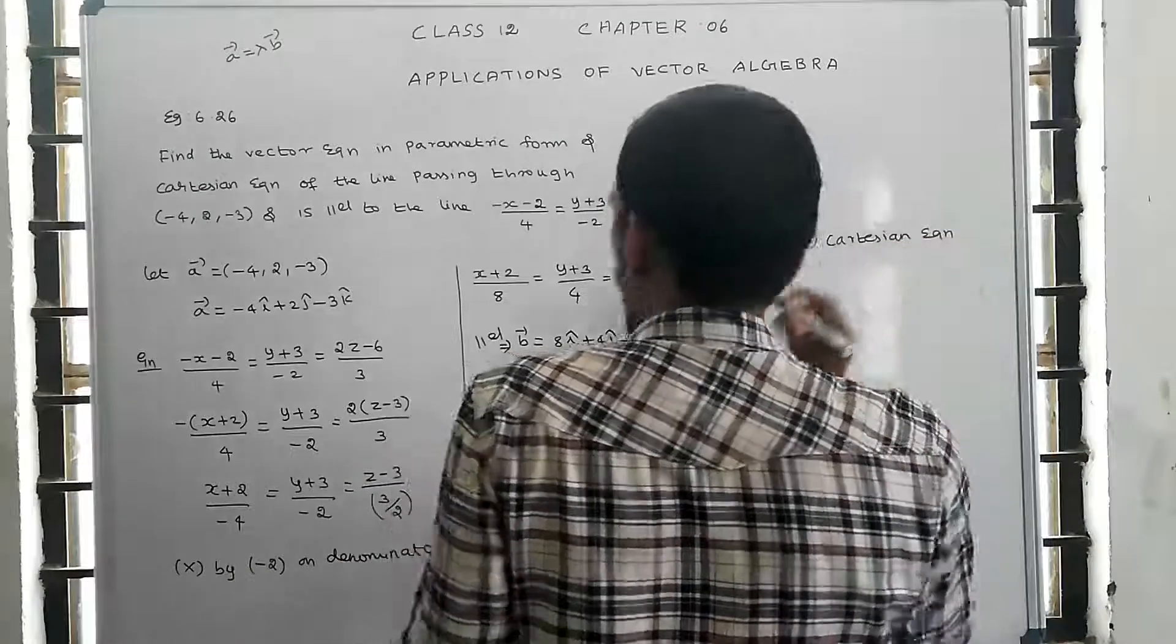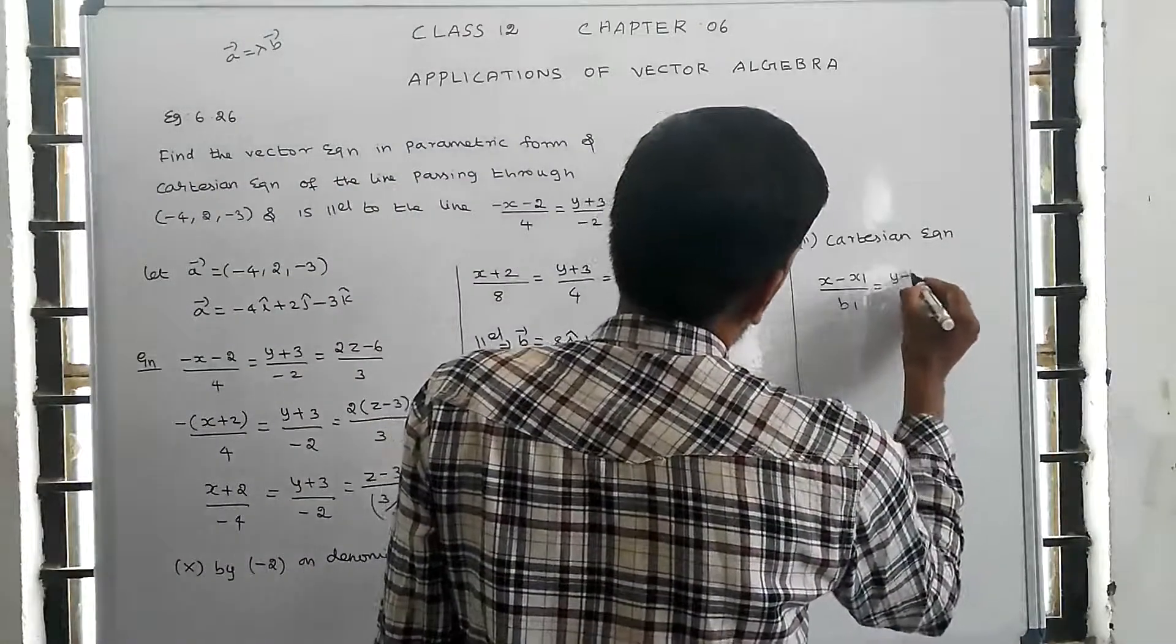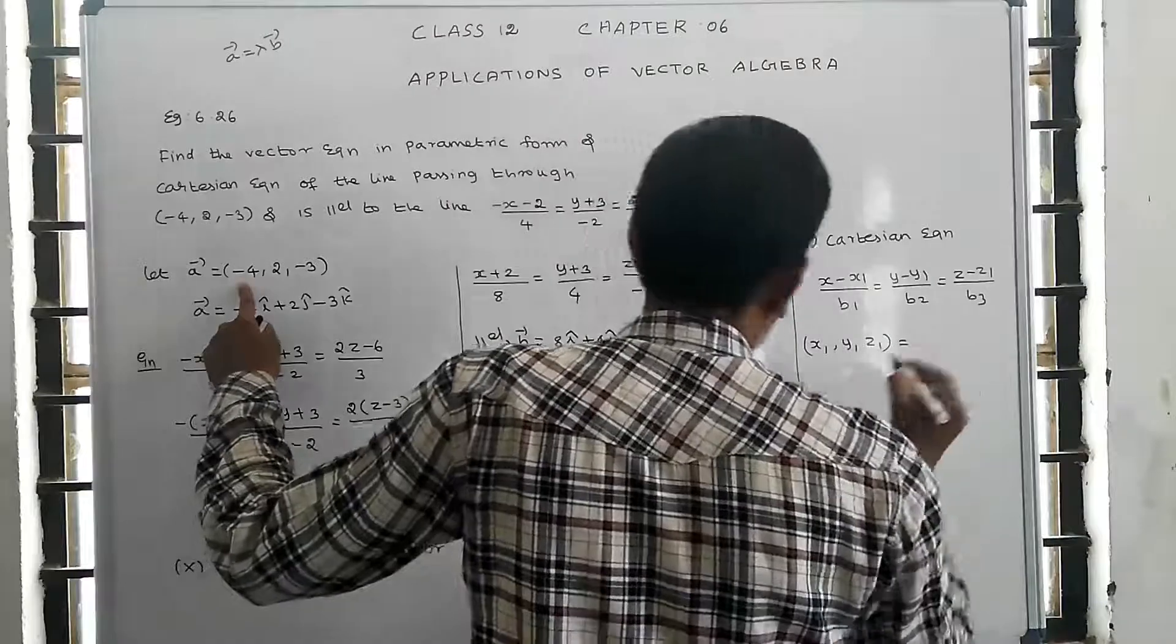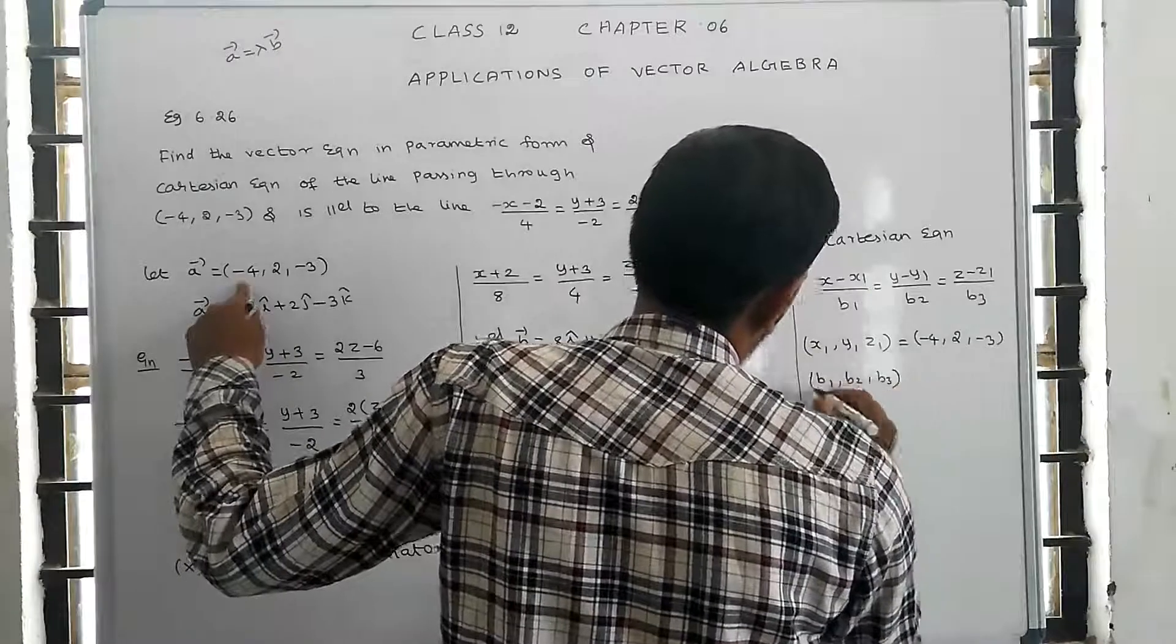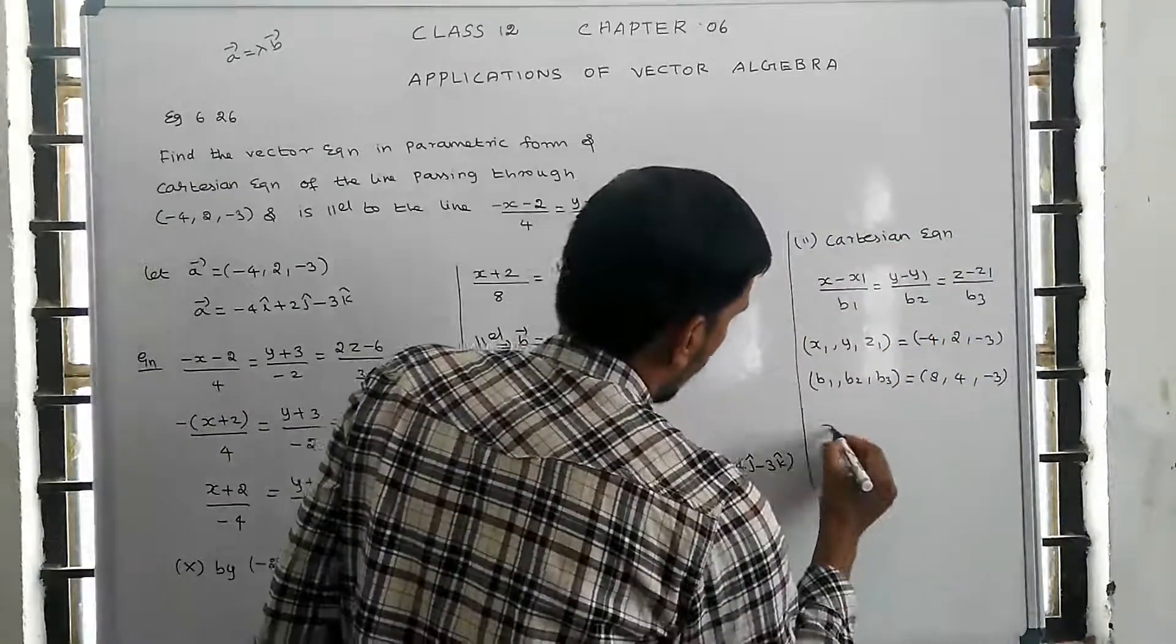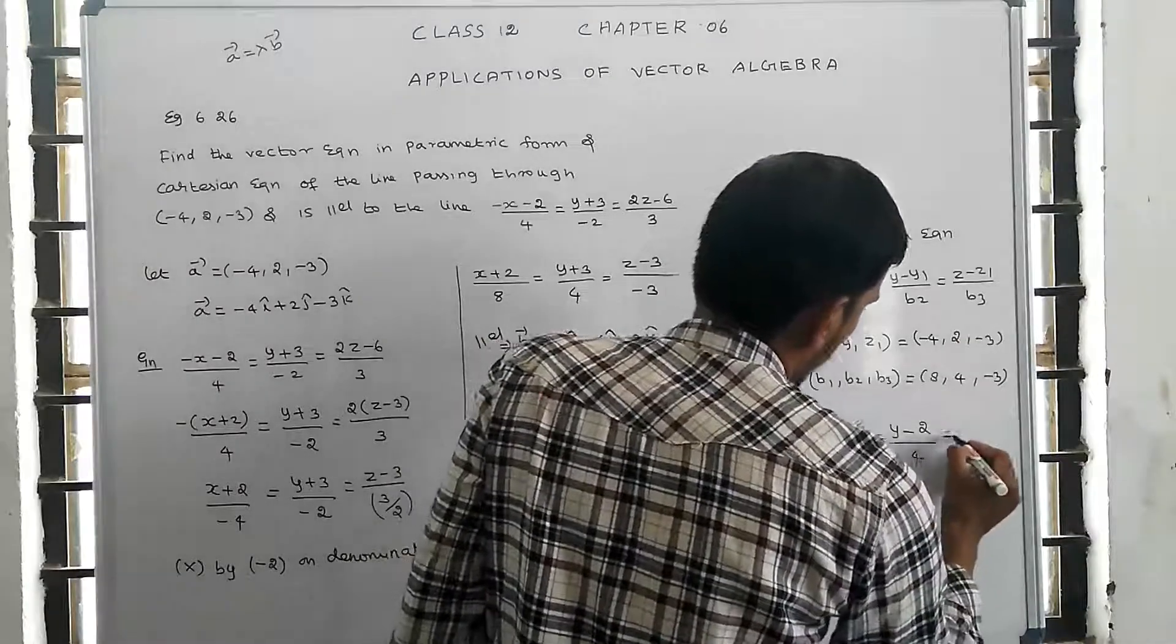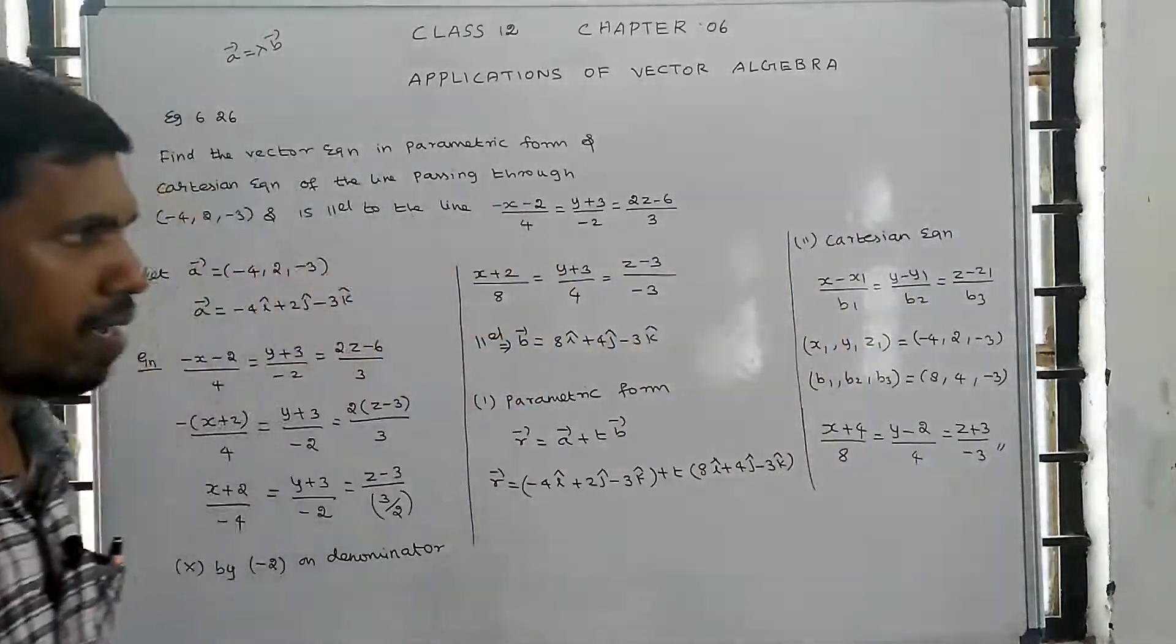For the Cartesian equation, we use one point and one parallel vector. The formula is (x minus x1) divided by b1 equals (y minus y1) divided by b2 equals (z minus z1) divided by b3. The point is minus 4, 2, minus 3, and b1, b2, b3 are 8, 4, minus 3. Substituting, we get (x plus 4) divided by 8 equals (y minus 2) divided by 4 equals (z plus 3) divided by minus 3. That is the Cartesian equation of the straight line.